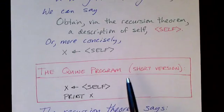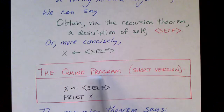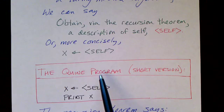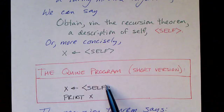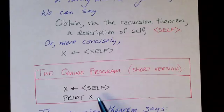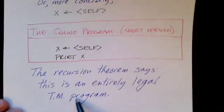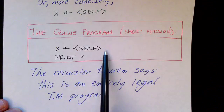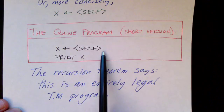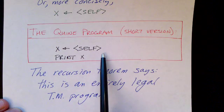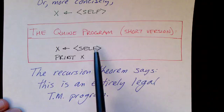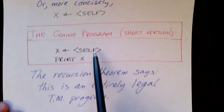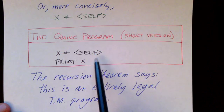Now if we have this, we can write our Quine program — remember, it's a program that prints itself. Very simply: X gets self, then print X. The recursion theorem says that this program is an entirely legal program. There is a Turing machine that will implement this algorithm. This is a computable algorithm, and the recursion theorem says that a statement where we are obtaining a description of the program itself is completely legal.